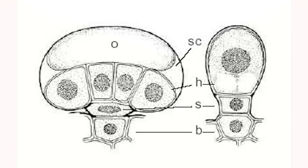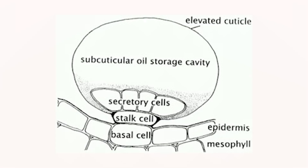In this diagram we see a glandular trichome, which is a hair on the plant that contains an oil duct on the end. The hair is labeled S and the oil duct on top is labeled O. Secretory cells labeled H are where the oil is produced and secretes into the secretory cavity. In this side-view diagram, the stock cell is where the oil is produced and then it moves up into the subcuticular oil storage cavity.